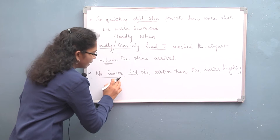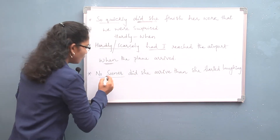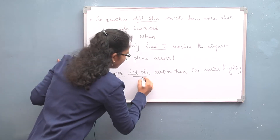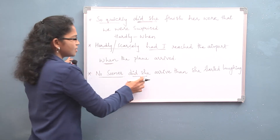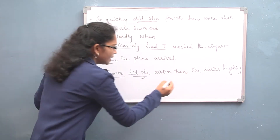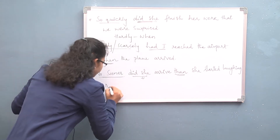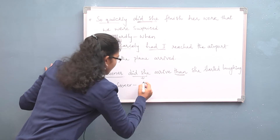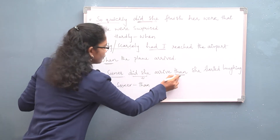'No sooner did she arrive than she started laughing.' 'No sooner' is also an adverb, so we invert the verb — 'did she', not 'she did'. For 'no sooner', the conjunction is 'than', not 'when'. That is why we have used 'than' here.